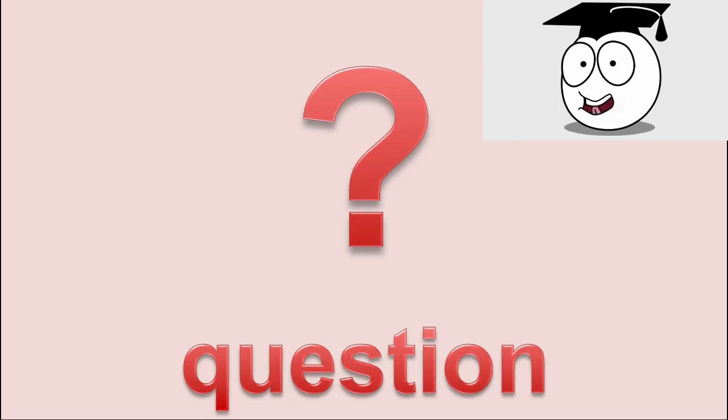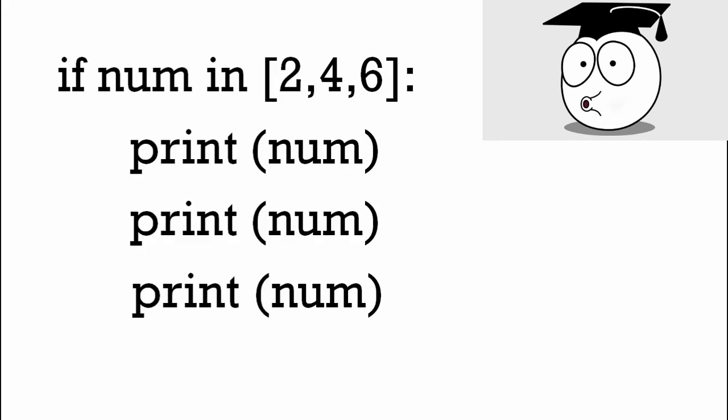So here's a question: Why is it called a loop? Well, here's our if statement. We've got numbers two, four, and six. And if the number's there, it's going to do these print statements.